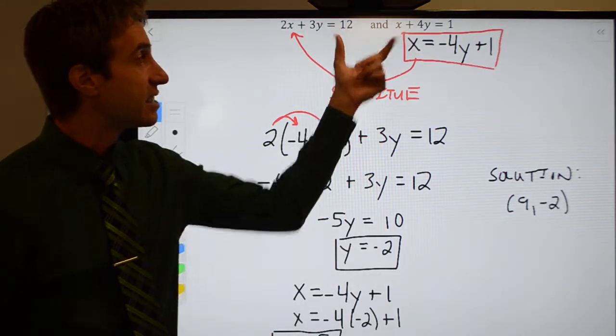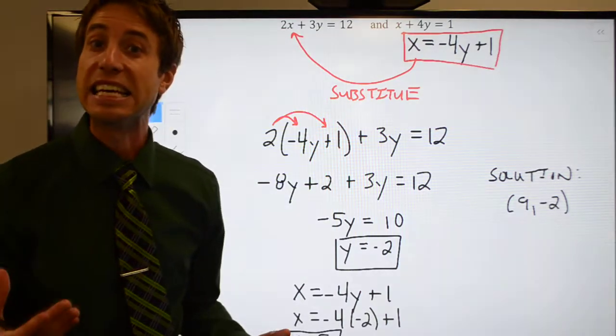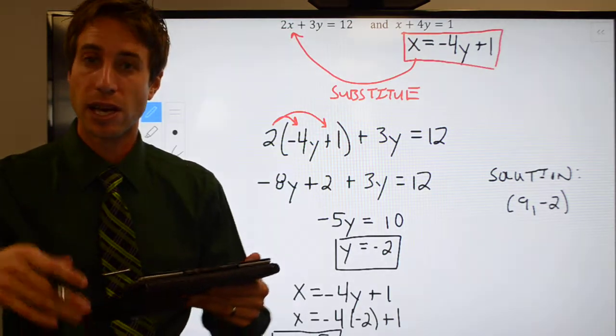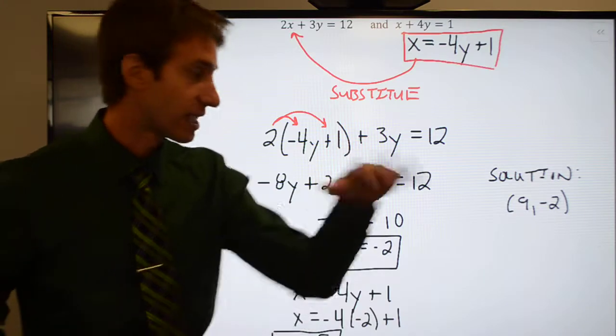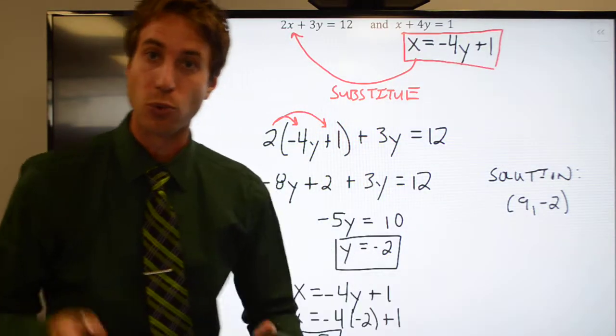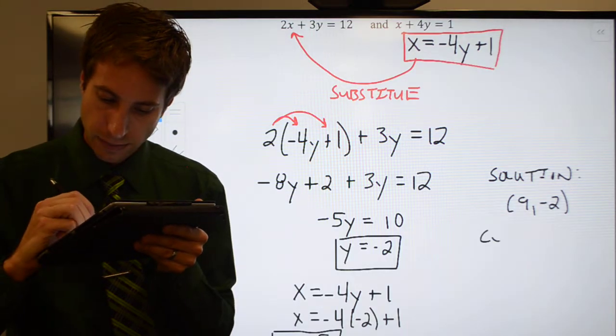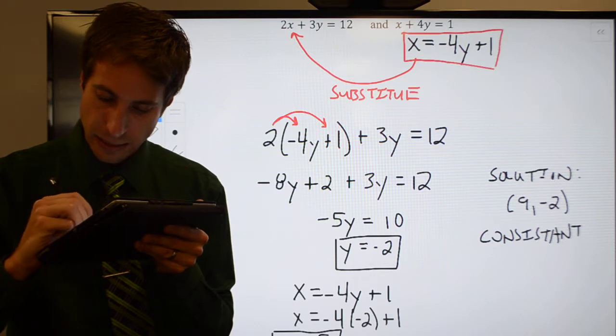And that means that this system of equations is consistent and independent. They're two different linear functions. This just happens to be the point where the two functions cross. If you were to graph them, this would be where those functions would intersect each other. So consistent and independent.